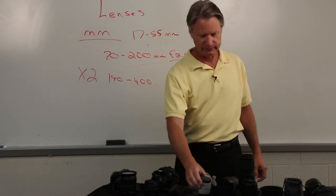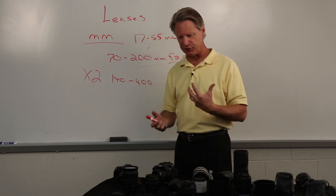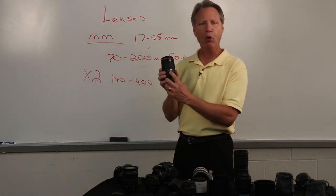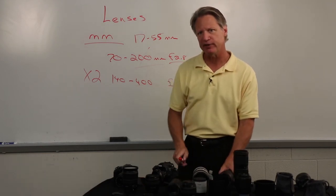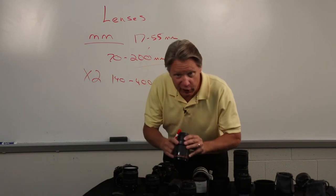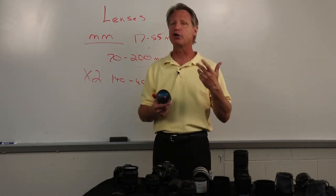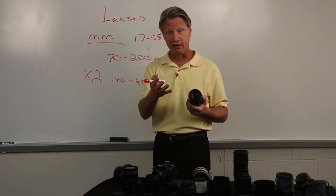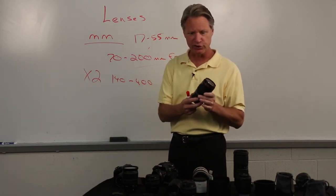I carried a 2x extender with me for 20 years — very handy and beneficial. Now, the cool thing about lenses is we have specialty lenses that allow us to do unique things. Here is a 100mm macro lens. What the macro lens allows you to do is get very, very close to the subject — so if you like taking close-ups of flowers, insects, bees, jewelry, a macro lens is very desirable.